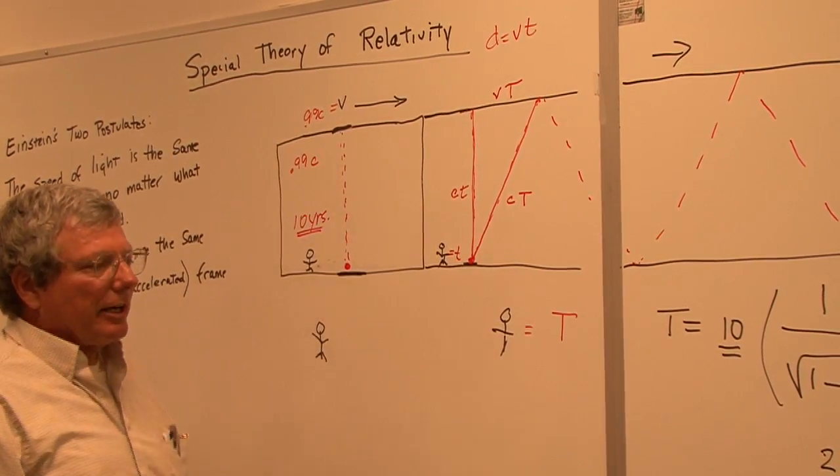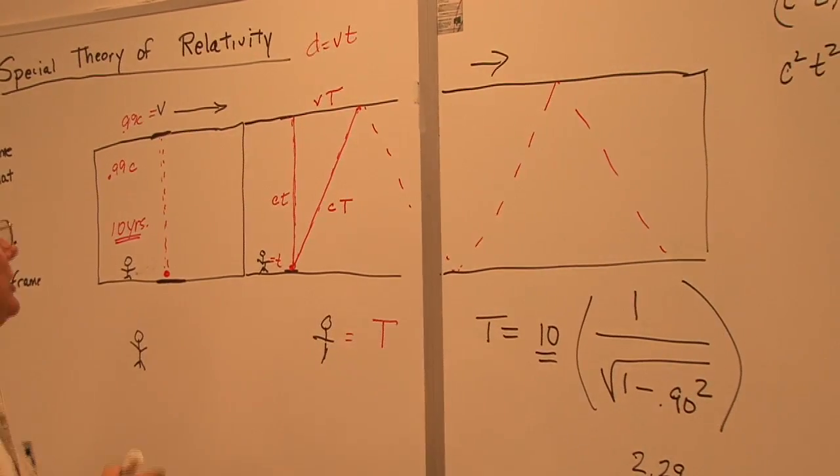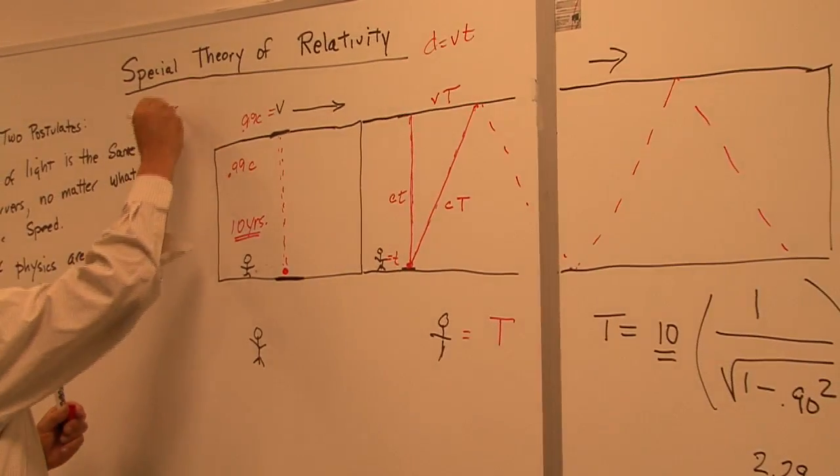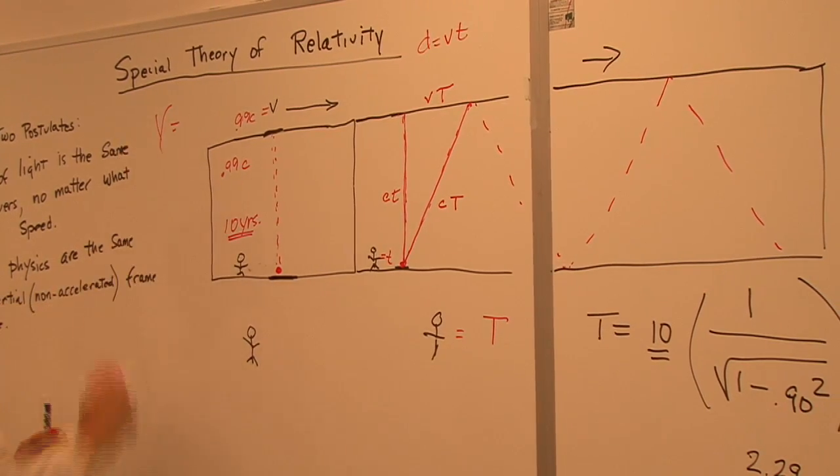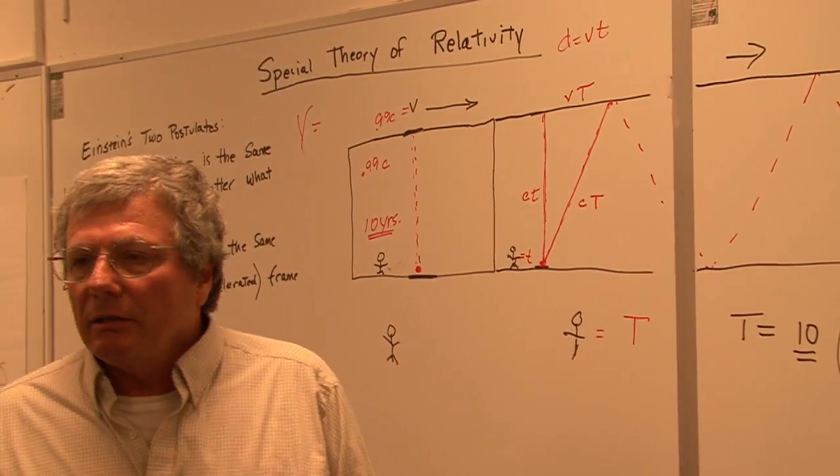Then first, let's calculate our new gamma factor. By the way, the gamma factor has a symbol kind of like that. What would you get for that, for 99%? 7.08.